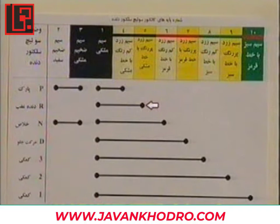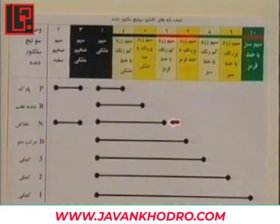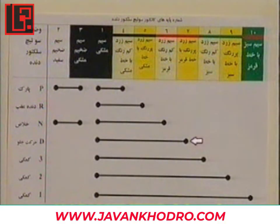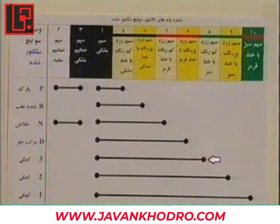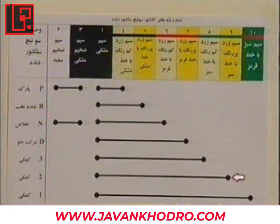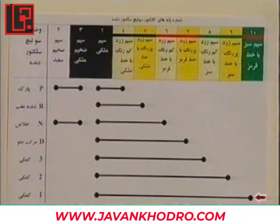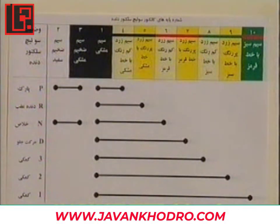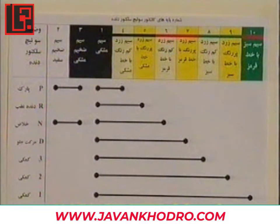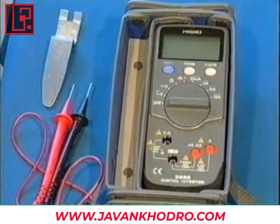در وضعیت دنده عقب ترمینال یک با پنج. در وضعیت دنده خلاص ترمینال دو با سه همچنین یک با شش. در وضعیت دنده حرکت به جلو ترمینال یک با هفت. در وضعیت دنده کمکی سه ترمینال یک با هشت. در وضعیت دنده کمکی دو ترمینال یک با نه. و بالاخره در وضعیت دنده کمکی یک ترمینال‌های یک با ده در ارتباط هم. در وضعیت‌های گوناگون اتصالات مختلفی وجود دارد که از اهمت برای اطمینان از سلامت آن‌ها استفاده می‌کنید.